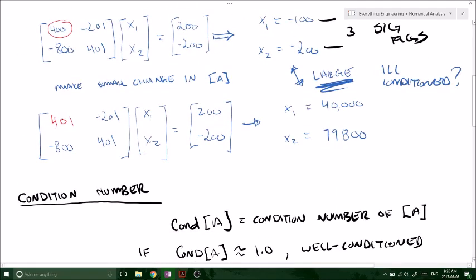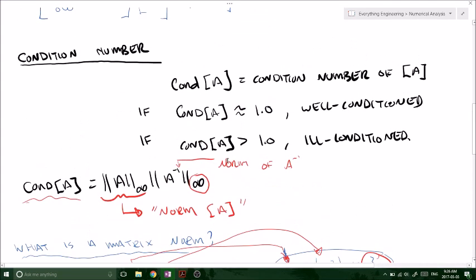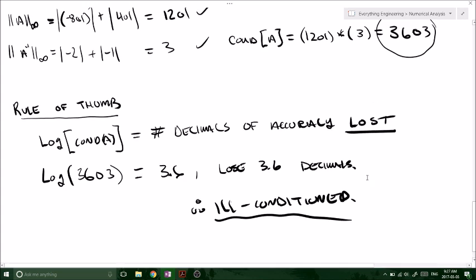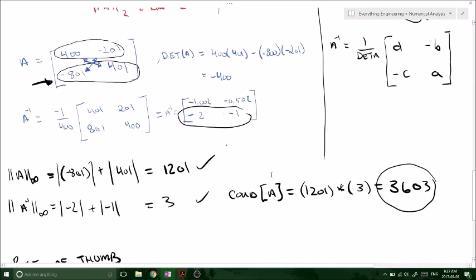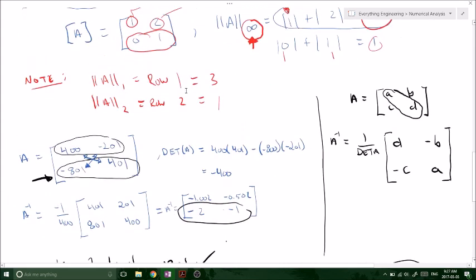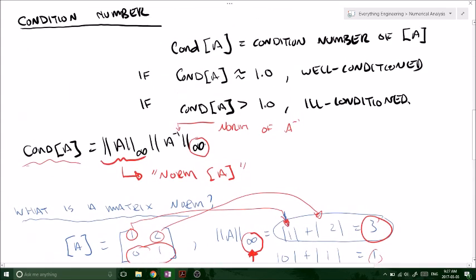Sorry, a small change in A. We've only changed A by 1, right? One component by one value, and we got quite a large change in our solution matrix or our solution vector. So when we confirmed it by using the condition number and finding out that our system is ill-conditioned. So that's what it means when someone asks what the condition number is and if the system or if the matrix will be ill-conditioned or well-conditioned.